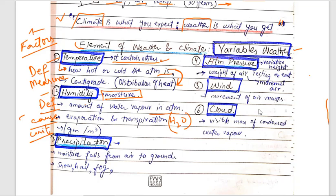The third variable is precipitation. Precipitation is the moisture that falls from the air to the ground — in the form of rain, snow, hail, or fog. Humidity is when water evaporates from the ground into the air, while precipitation is when it returns to the ground. Temperature affects climate and weather through humidity; Karachi's weather, for example, has high humidity which intensifies both heat in summer and cold in winter.